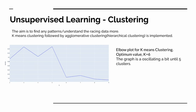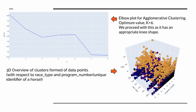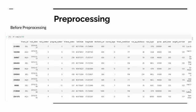We next performed unsupervised clustering using k-means, grouping data points based on the similarity of races. Via k-means clustering we got an elbow plot with an optimum value of k equal to 6, but the plot oscillated until k equal to 5 clusters. Hence, we resorted to agglomerative clustering, where each point is treated as an independent cluster and two clusters are combined based on their similarity. We got a clean elbow plot for agglomerative clustering at an optimum k of 6. The 3D overview shows the clusters formed using agglomerative clustering with respect to race type, program number, and odds.